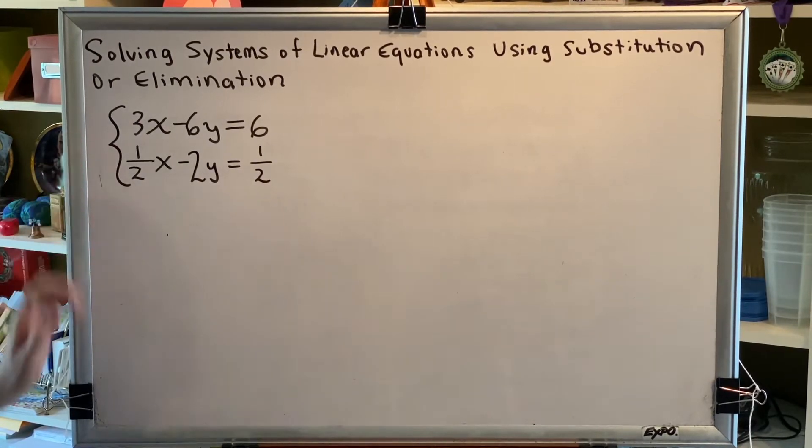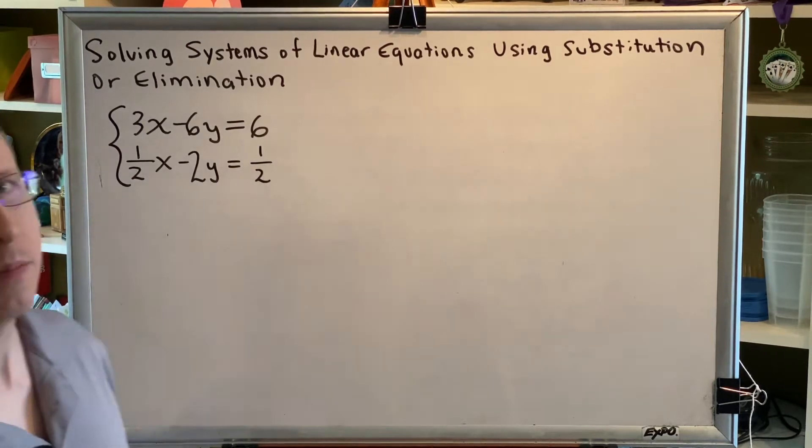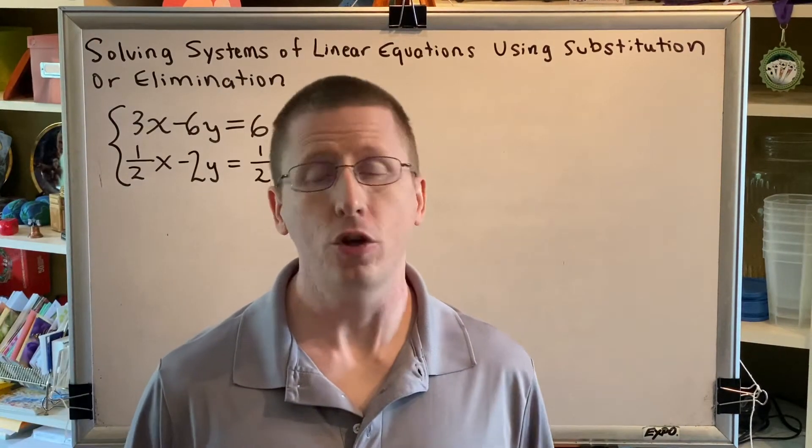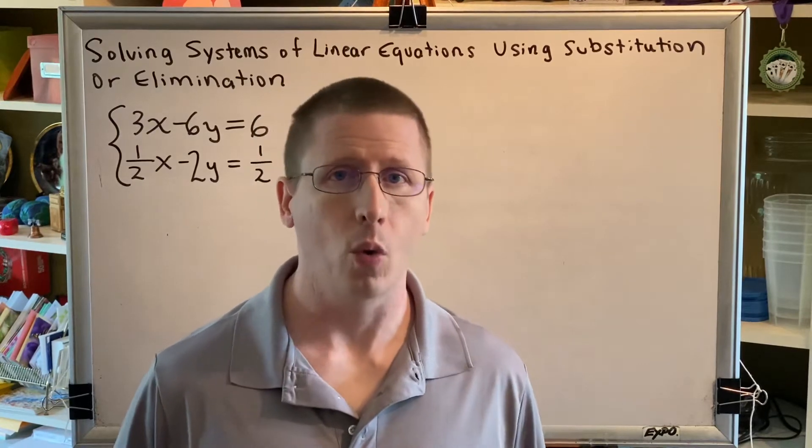All right, here's our system. The top equation is 3x minus 6y equals 6. The bottom equation is 1 half x minus 2y equals 1 half. The first decision that you need to make is what method are you going to use? Substitution or elimination?